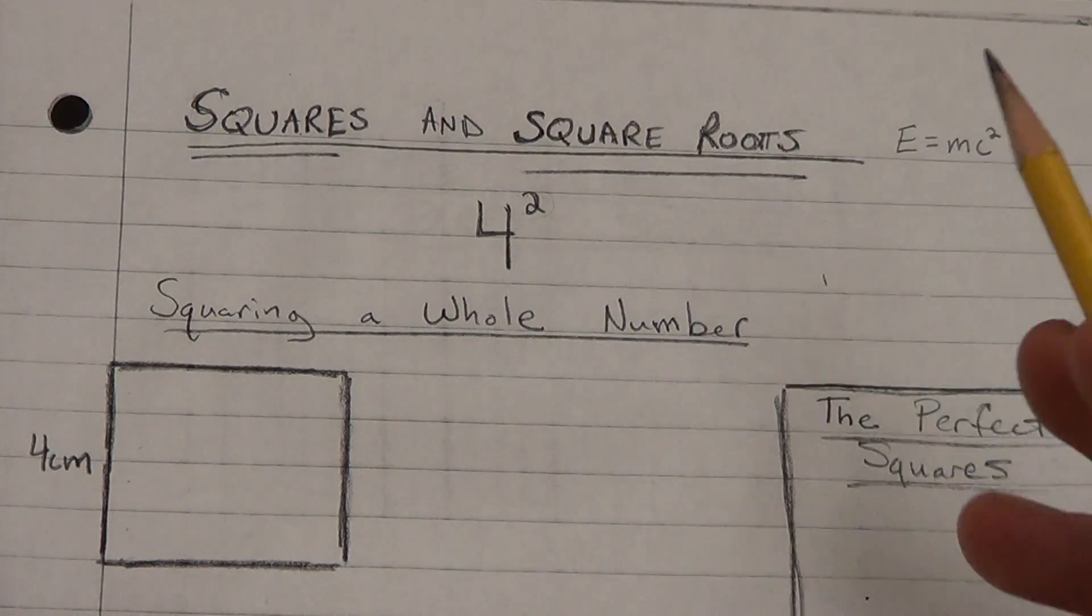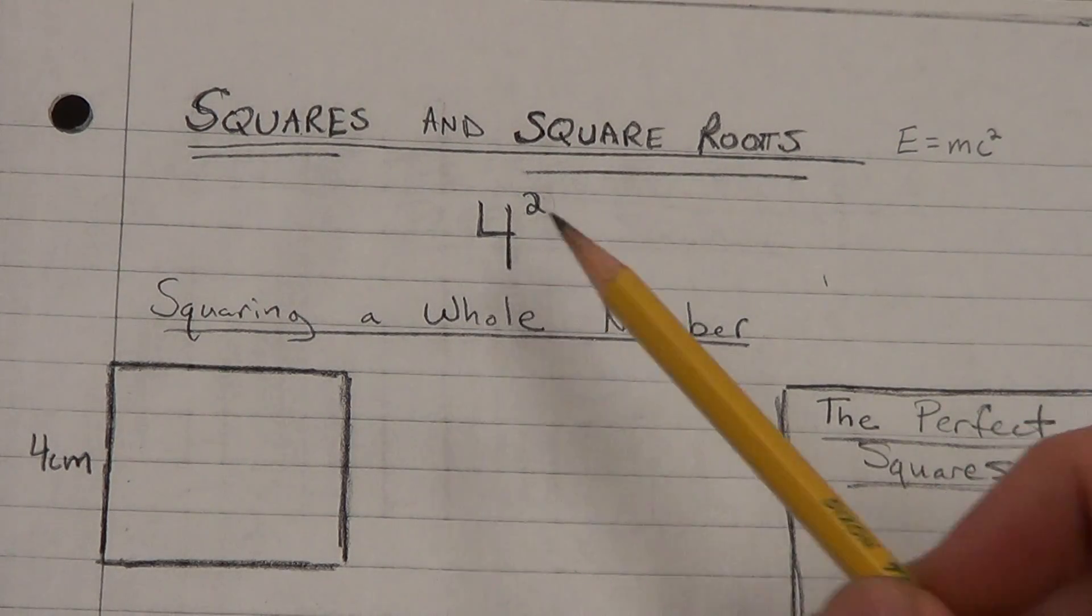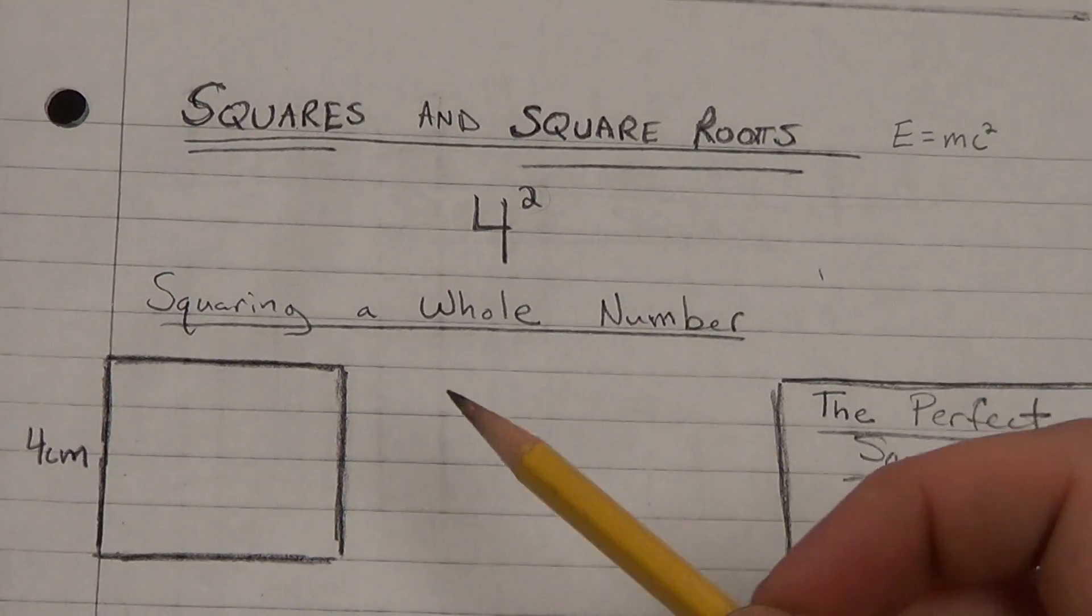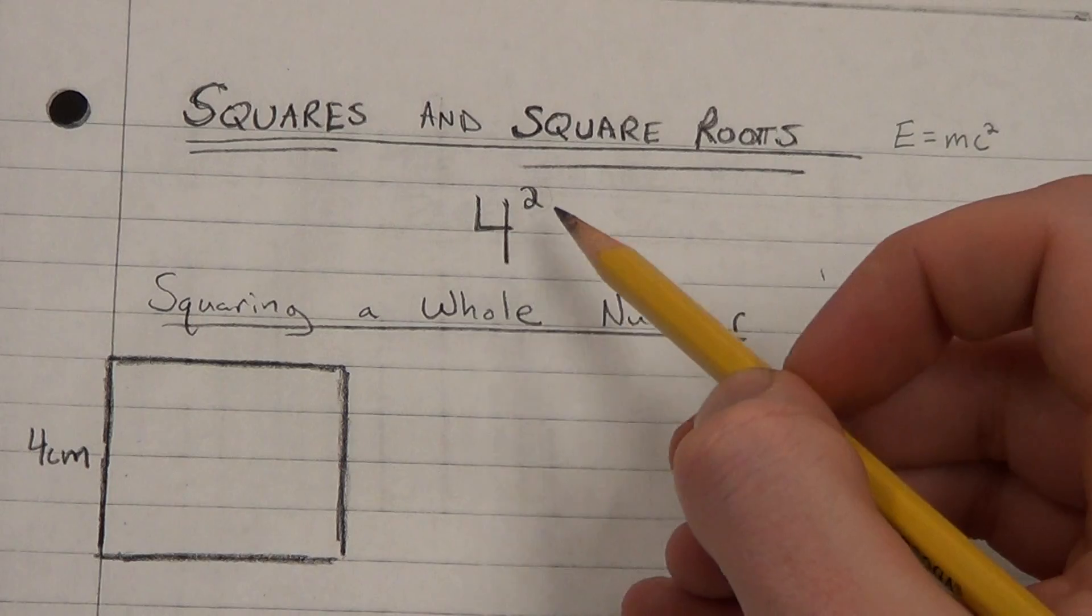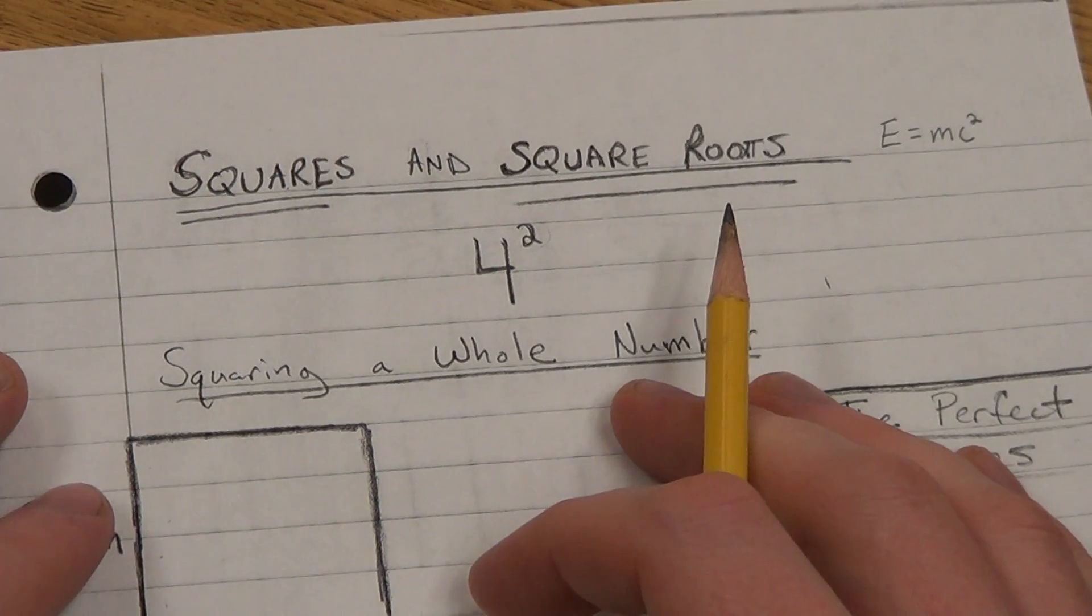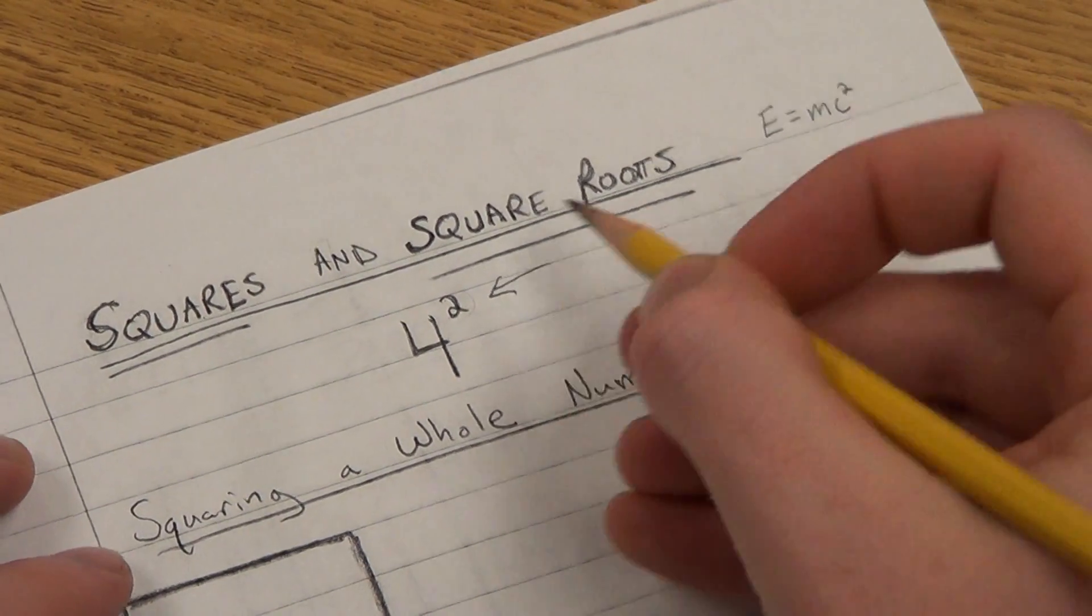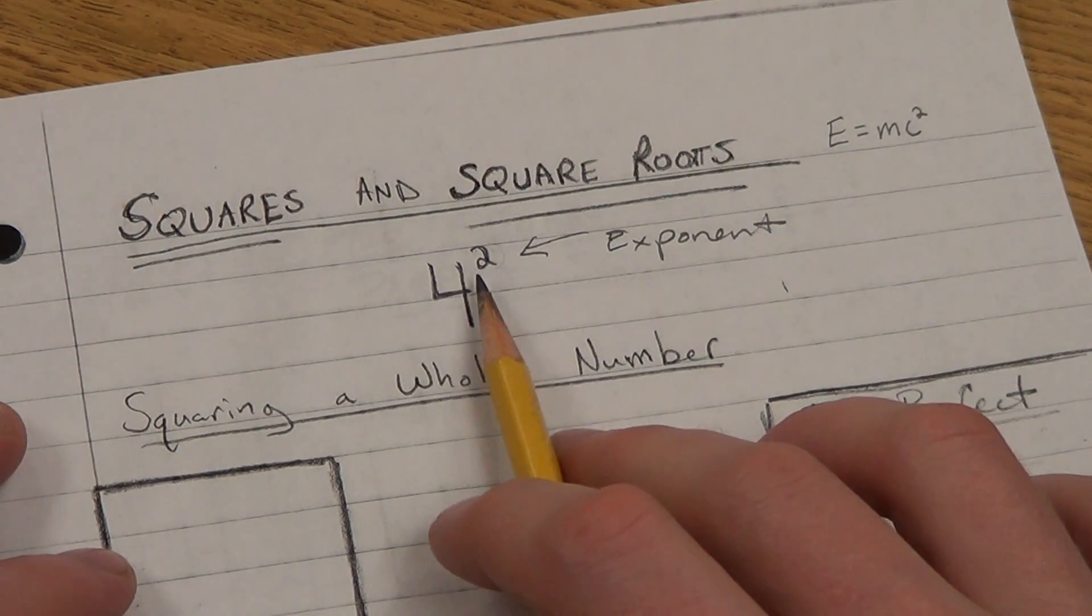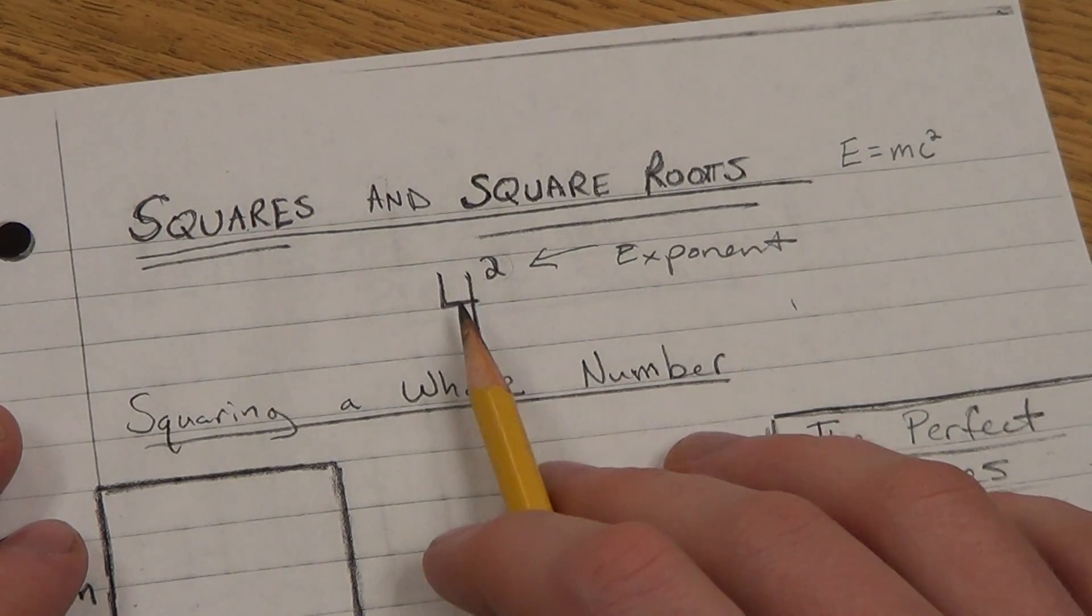So first some basic vocabulary. What do we mean when we talk about squares in math? You've probably seen squares or heard E equals mc squared, the famous relativity equation. And this number here is read as 4 squared or 4 to the second power, but squared means an exponent that is to the second power.